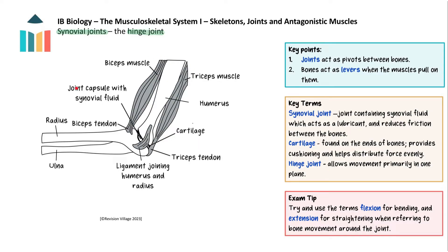This diagram shows the attachment of the muscles to the bones via strong, largely inelastic tendons that enable the muscles to pull against the bones. If they were too elastic they would not be able to exert such force, as they would stretch as the muscles contract. Flexion, or bending of the elbow, is brought about when the biceps contract and the triceps relaxes. The triceps contracting and the biceps relaxing brings about extension, or straightening of the elbow.